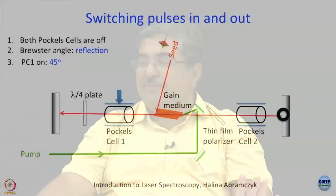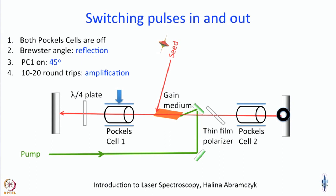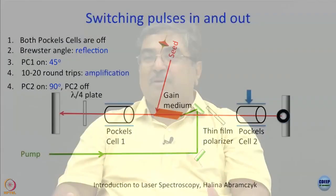You cannot do this by passive optics alone — active switching via Pockels cells is essential. Typically you make it do 10 to 20 round trips. After the required amplification level is reached, Pockels cell 2 is switched on and Pockels cell 1 is switched off. Pockels cell 1 is switched off not only because it is no longer needed but also to prepare the amplifier for the next seed pulse.